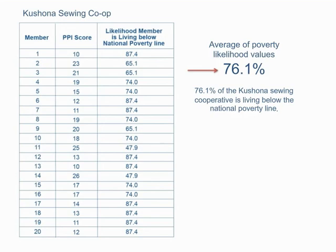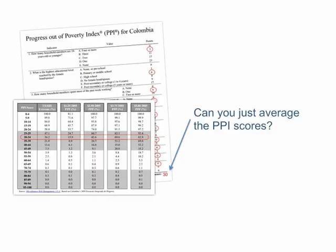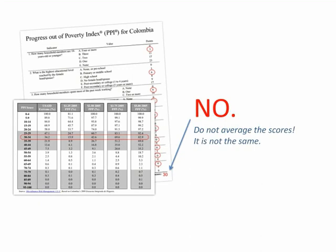Your data may include hundreds or thousands of entries, not just 20. Averaging numbers on that scale is easily done in Microsoft Excel. Can you calculate the poverty rate of a group by averaging the group's PPI scores and converting that average score to a poverty likelihood value? No. You cannot calculate the poverty rate in a group by averaging the score. You must average the likelihood values or your result will be wrong.